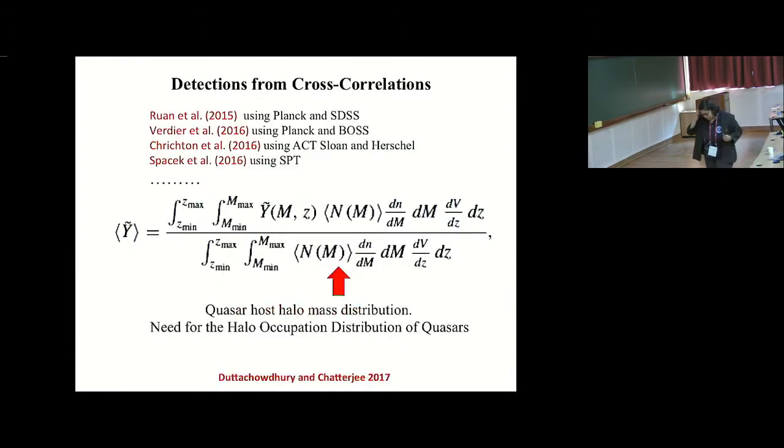Then years passed, nothing much happened until the Planck, SPT and ACT maps came in. Many of these groups actually did the cross-correlation detection: Planck and SDSS, Planck and BOSS, ACT and Sloan and Herschel. These groups actually did the stacking analysis technique, the cross-correlation technique, not exactly what we did, but in that line. Some of the groups actually said that they do detect quasar feedback because there is an enhanced signal when you include the quasars above what you expect from galaxy clusters.